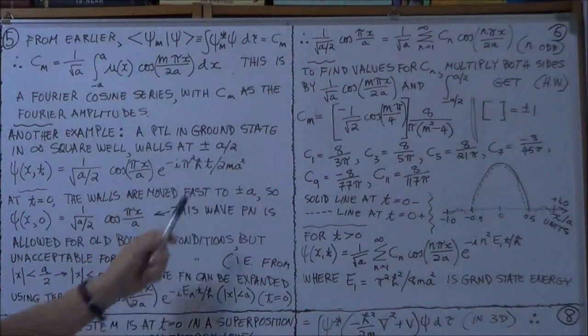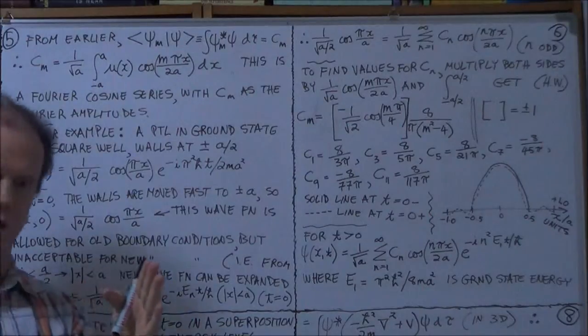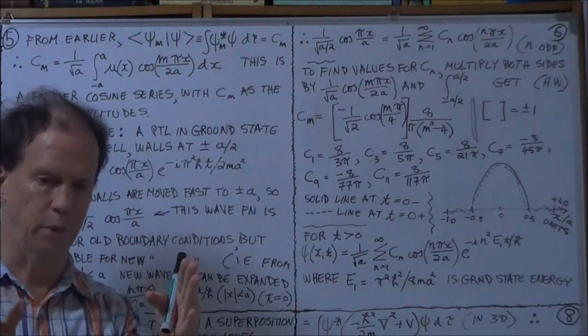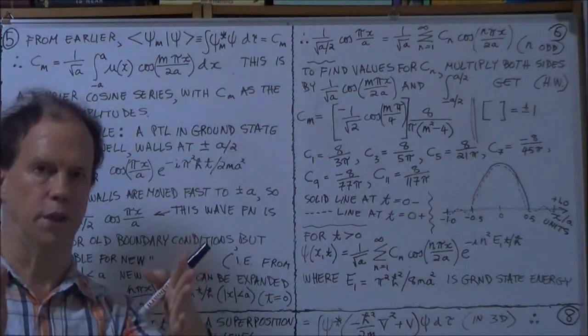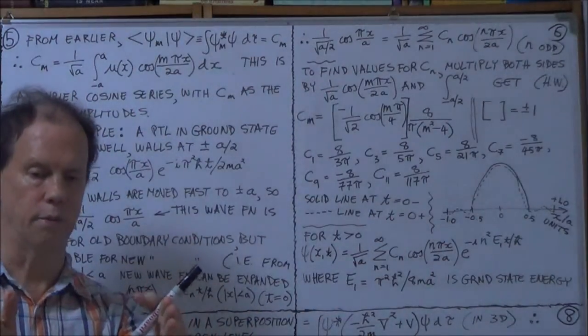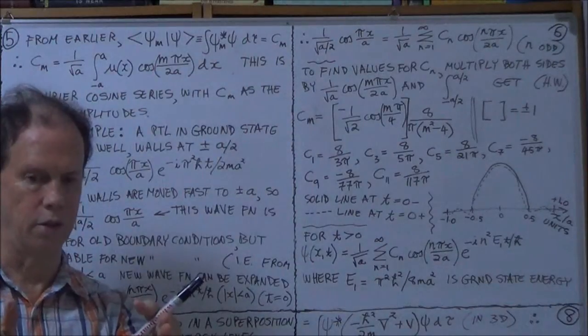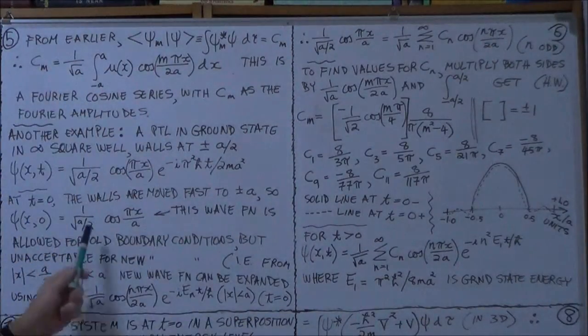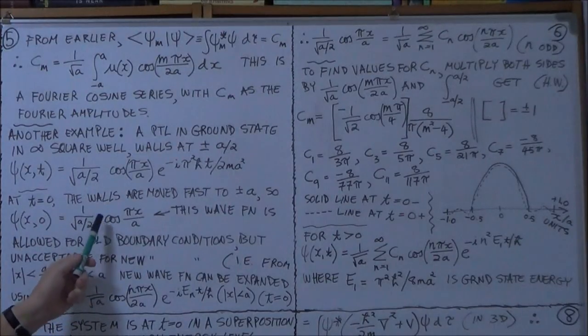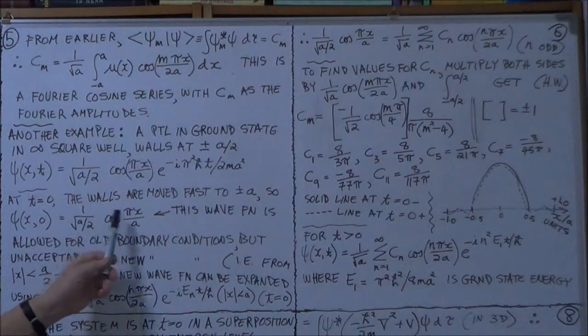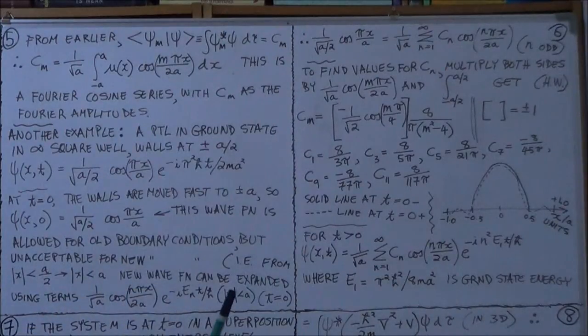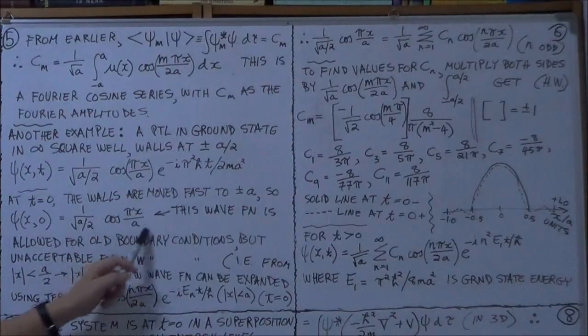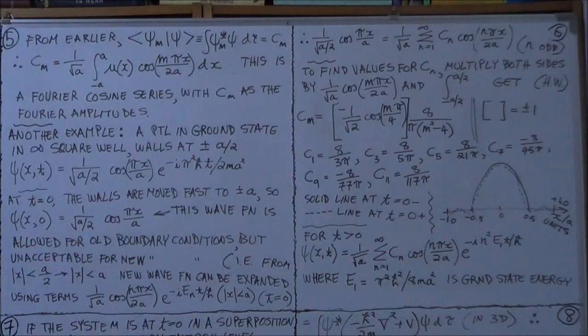for t greater than 0, the boundary conditions have changed. Now, the infinite walls, where the potential, beyond which the potential goes to infinity, they've now moved from plus or minus a over 2 to plus or minus a, right? So, this is no longer a solution, in a sense, for the new boundary condition, right? The doubling of the width. So, but it is the starting state at time t equals 0.